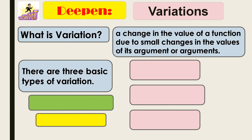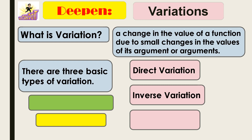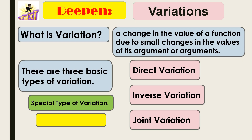There are three basic types of variation. First is direct, inverse, and joint variation. There is also a special type of variation: combined variation.